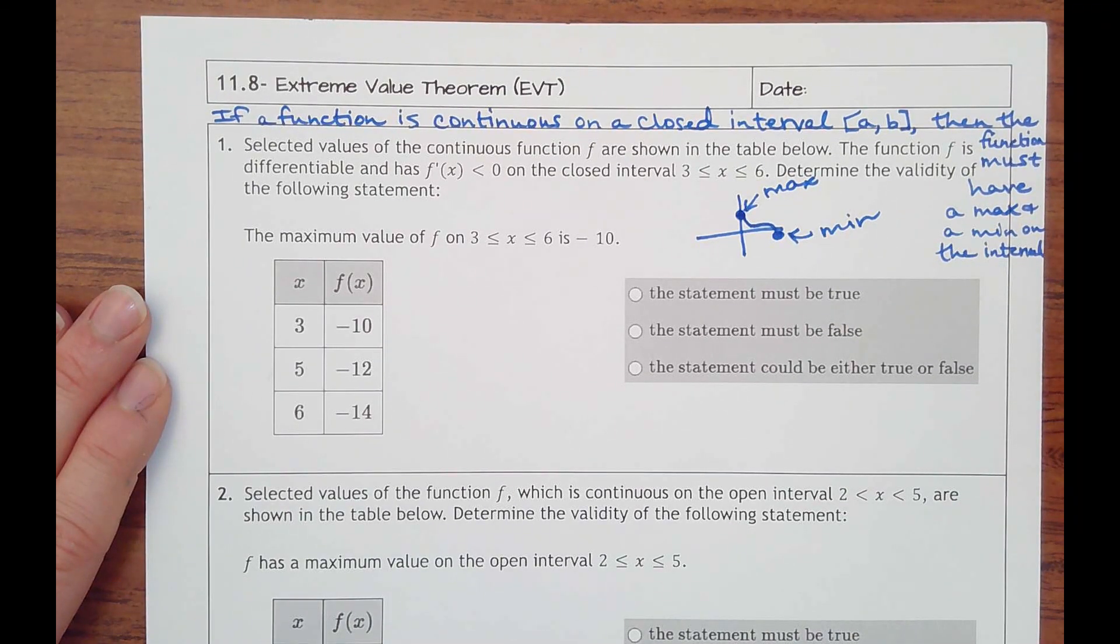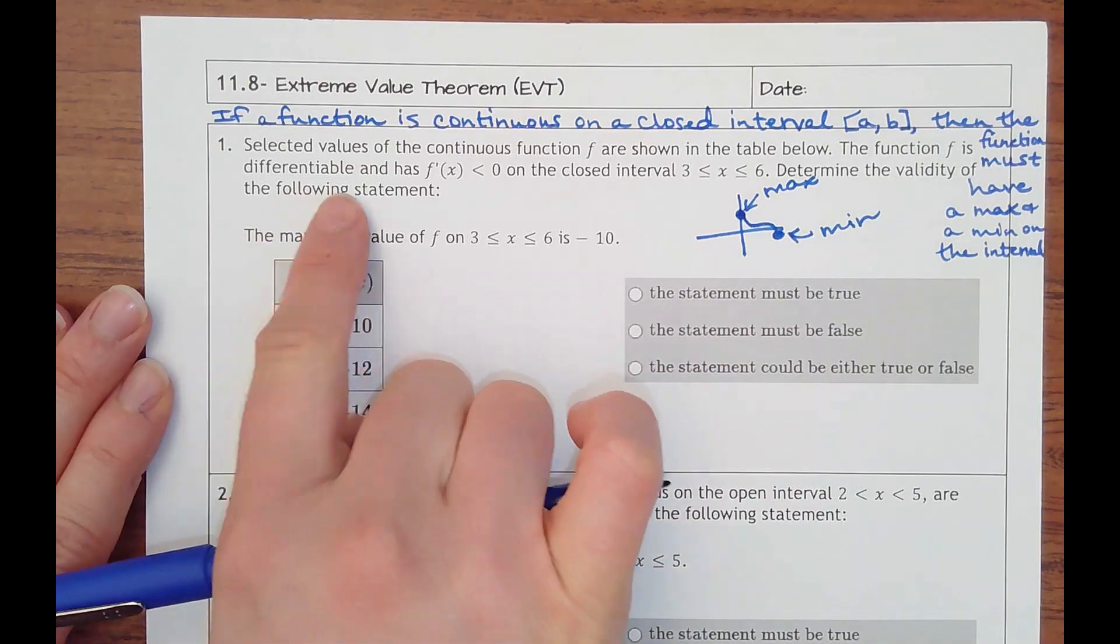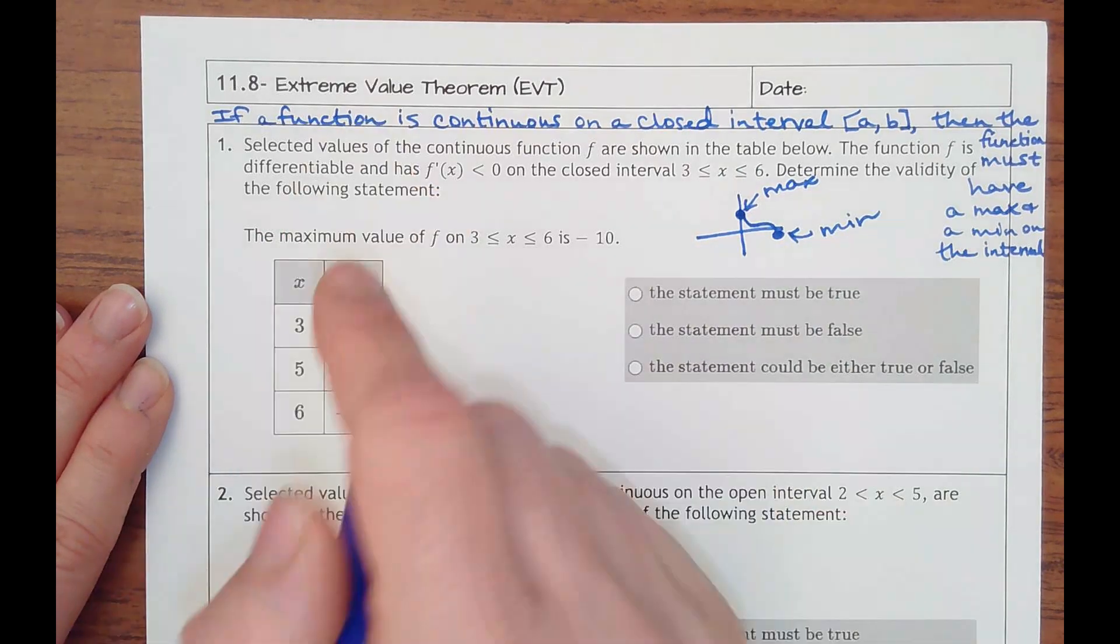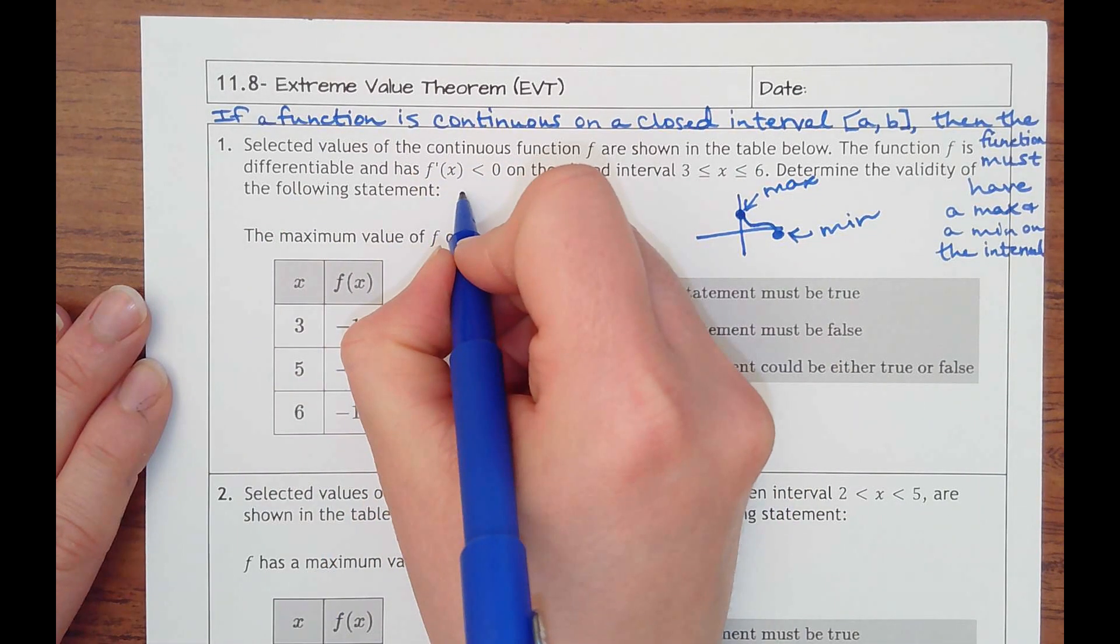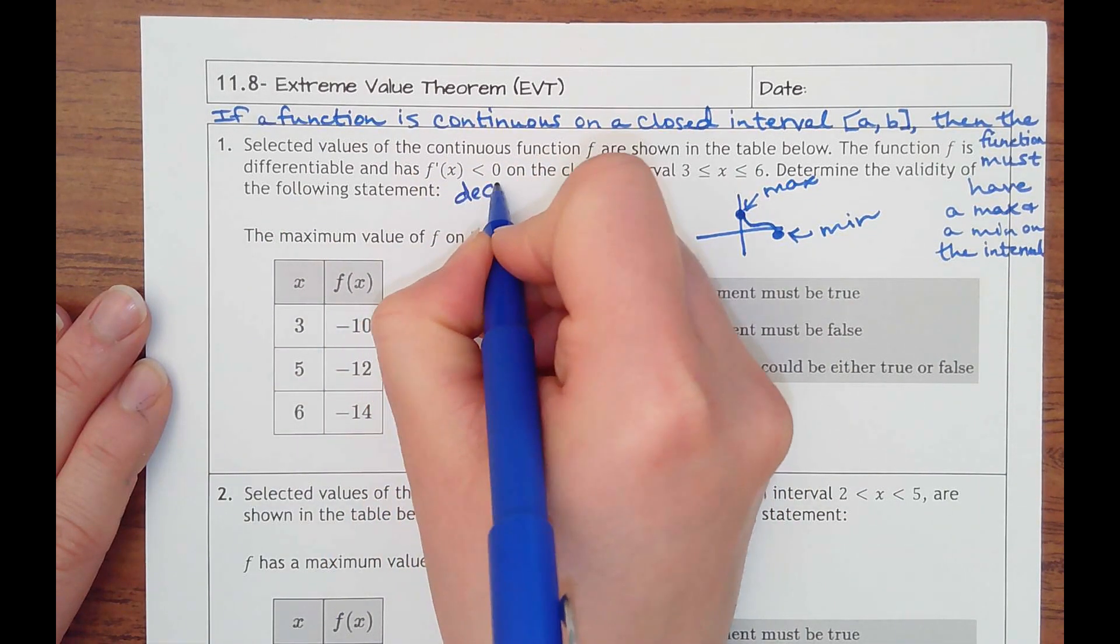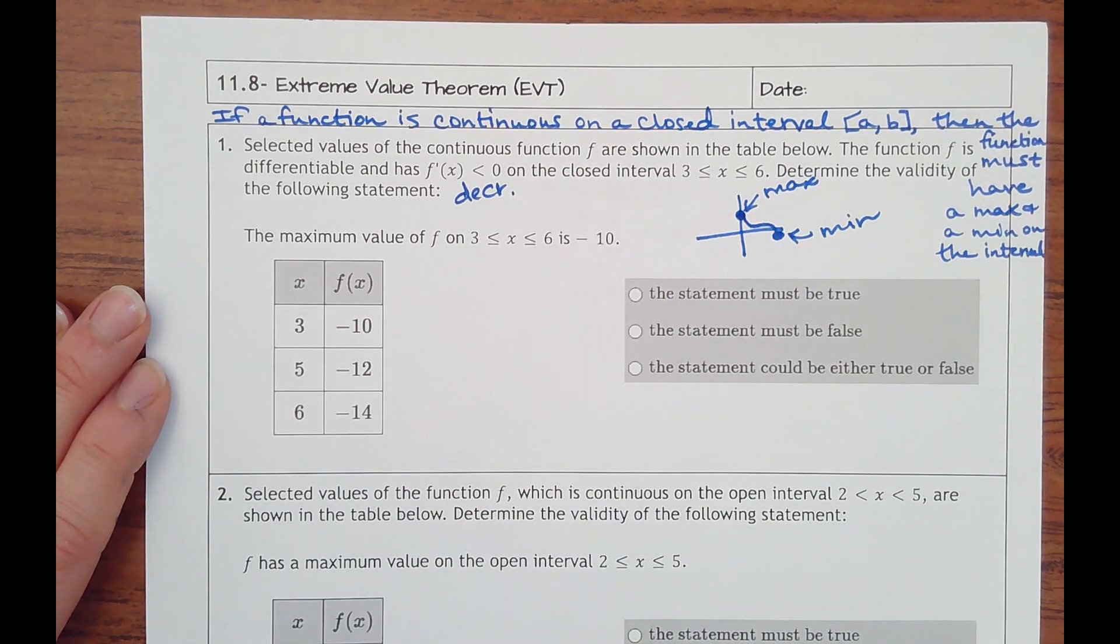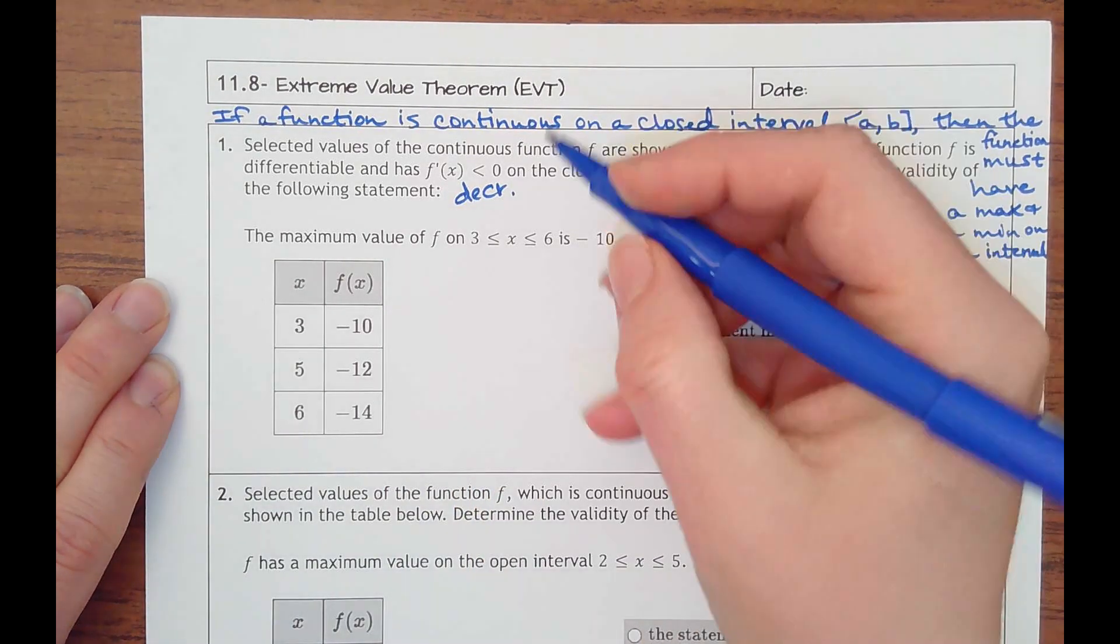Number one says selected values of the continuous function f are shown in the table below. Function f is differentiable, so that means it's continuous, and has slopes that are negative, so we'll say decreasing, on the closed interval from 3 to 6. Determine the validity of the following statement: the maximum value of f on x between 3 and 6 is negative 10.